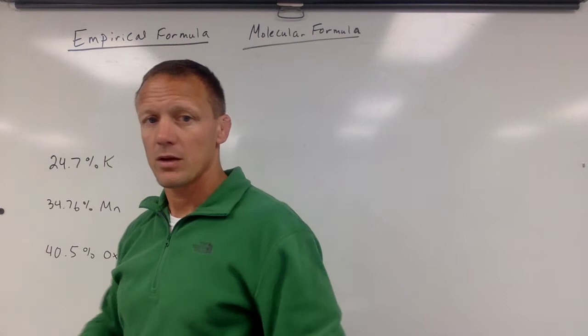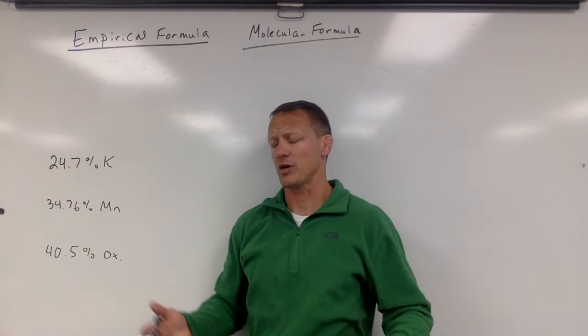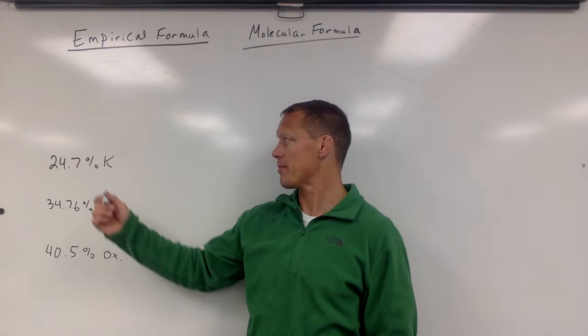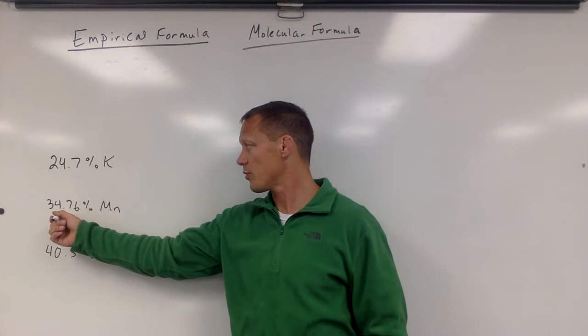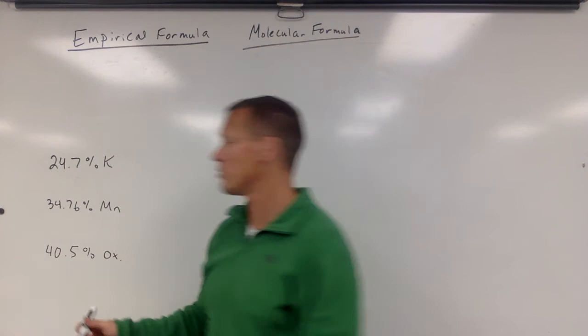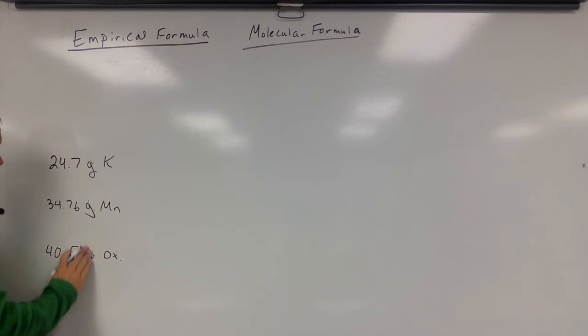So what we're going to do is pretend like we have a 100 gram sample of this compound. 100 is easy. So if we have 100 grams of this compound, that means that 24.7 of those grams are potassium, 34.76 grams are manganese, this many grams are oxygen. They would always be in that ratio in terms of grams.